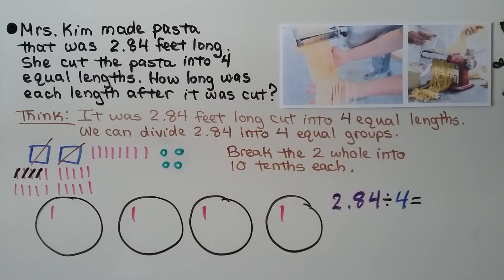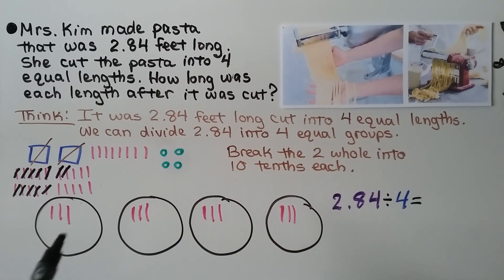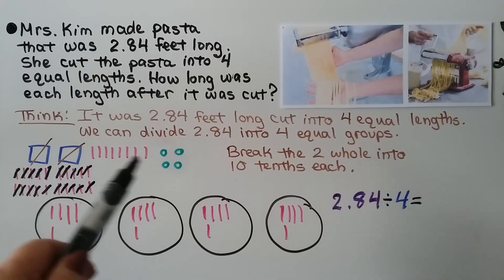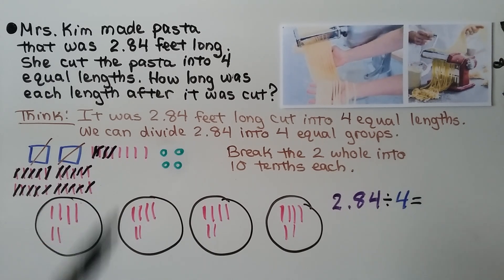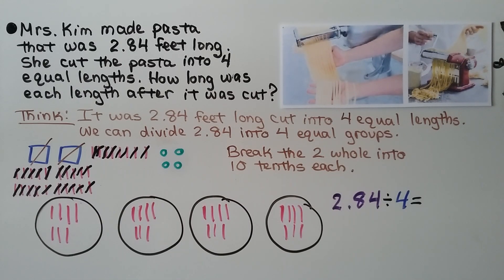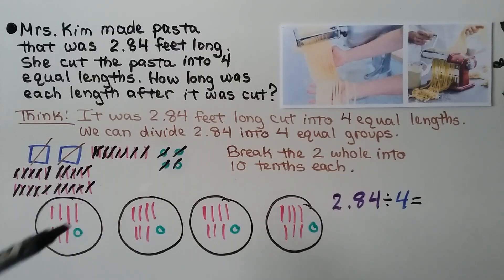We put another one into each group, and we can do it again — we have plenty left over. For each one we put in a group, we cross it off so we know we used it. We keep going, making sure to cross them off as they're being used. Once we've finished the regrouped ones, we draw a little green circle in each group for the four hundredths. We make sure we cross them off so we remember we used them. Now we count how many are in each group to make sure they're all the same.